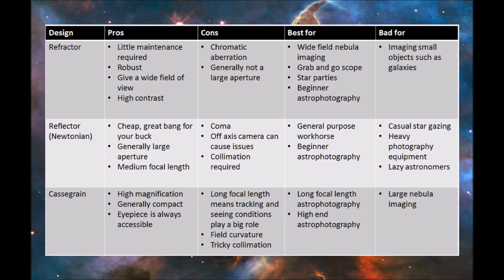Newtonian reflector telescopes are amazing value for money. For a very little amount you're able to get quite a large aperture. So it's great bang for your buck. They also tend to be a very good medium focal length, so you'll be able to see most objects in the sky.